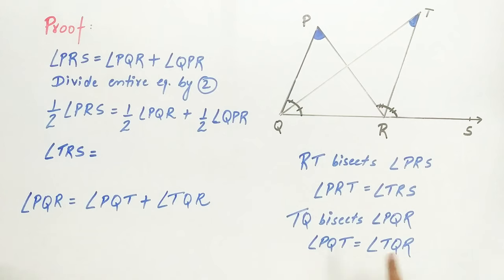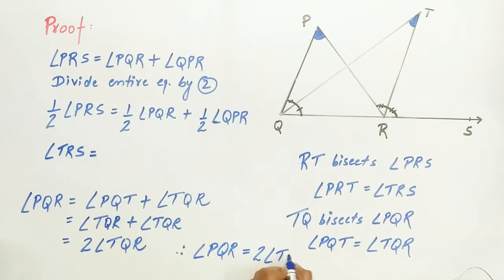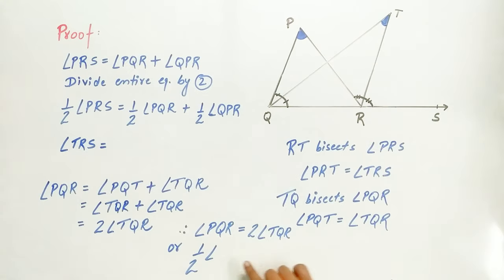We know angle PQT equals angle TQR. Hence, we will substitute angle TQR in place of angle PQT. Angle TQR plus angle TQR equals twice angle TQR. Hence, angle PQR equals 2 times angle TQR, or half of angle PQR equals angle TQR.